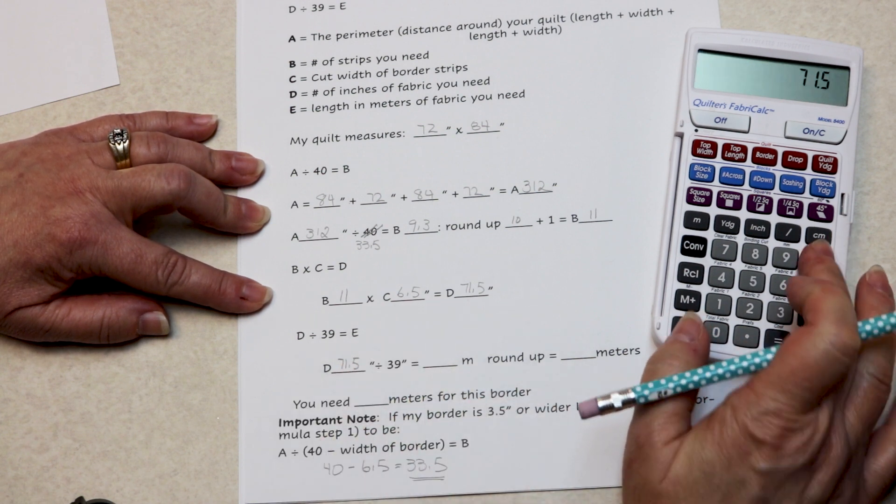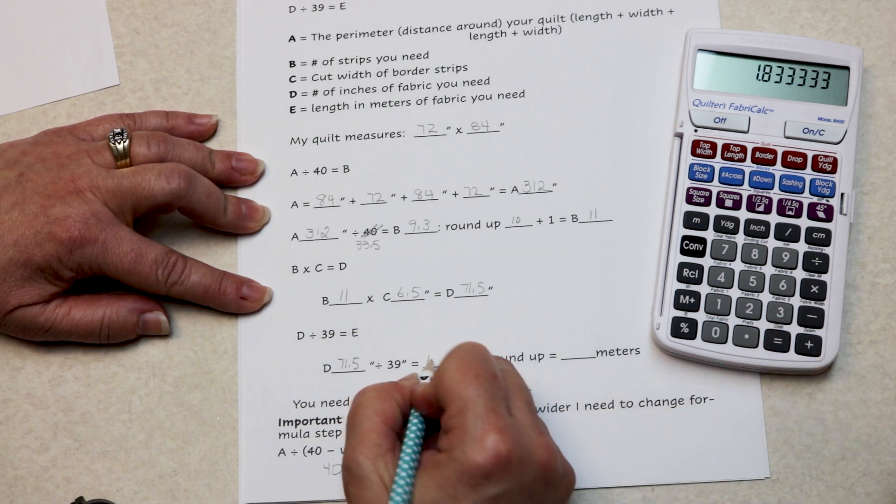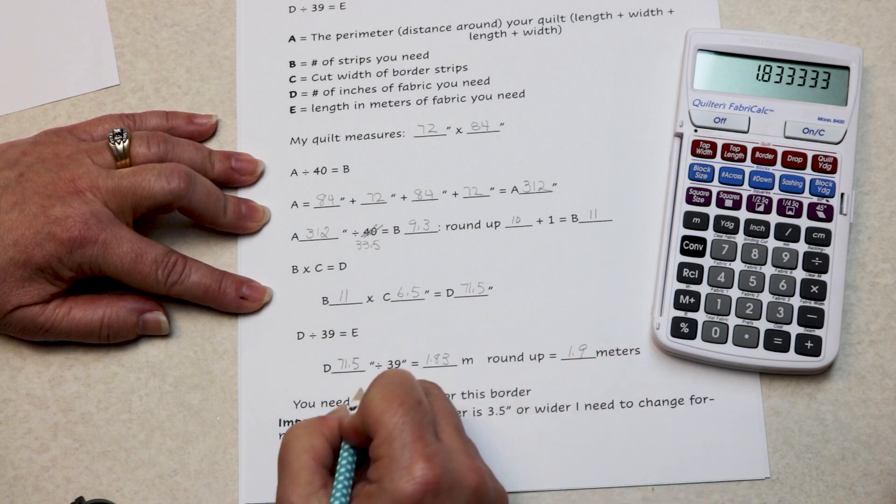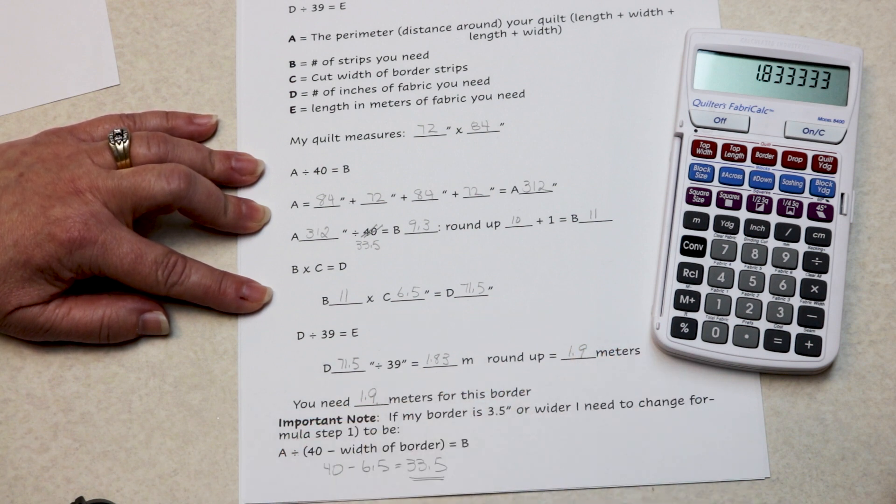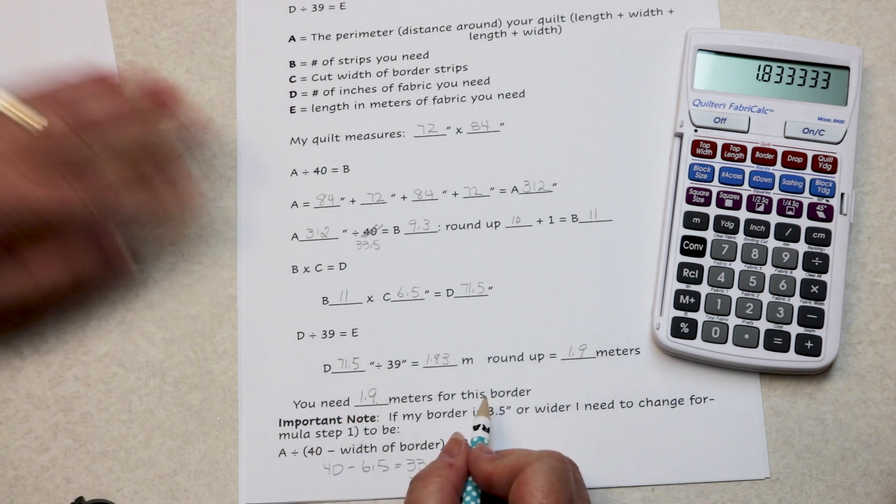How many meters do I need? 71 and a half divided by 39 is 1.83 meters. Round it up. I need 1.9 meters for the large outside border of my quilt.